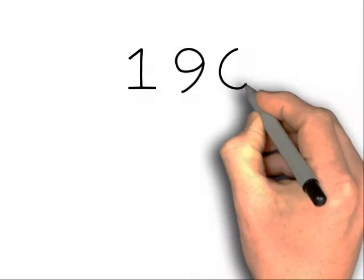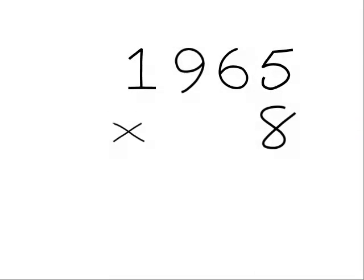Let's have a look at an example. Let's have a look at 1965 times 8. First thing we do is put a 0 in front of the number. And starting at the right hand side, we're at the 5.